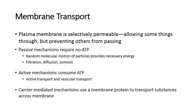A concentration gradient means you have more molecules on one side than the other. For example, if gradient A has fewer molecules and gradient B has more, the molecules in gradient B will flow over to gradient A — from high concentration to low concentration.